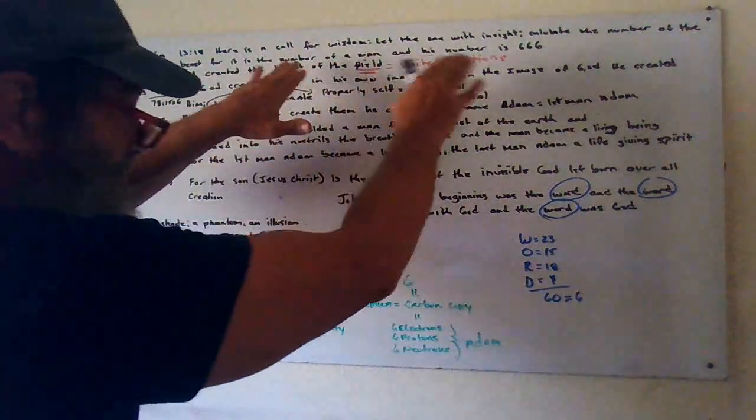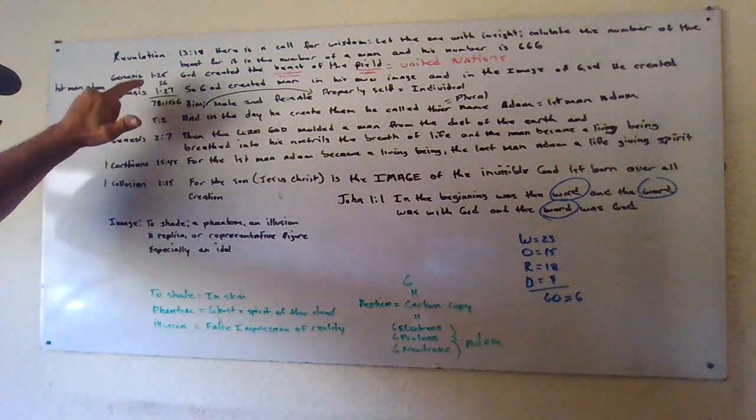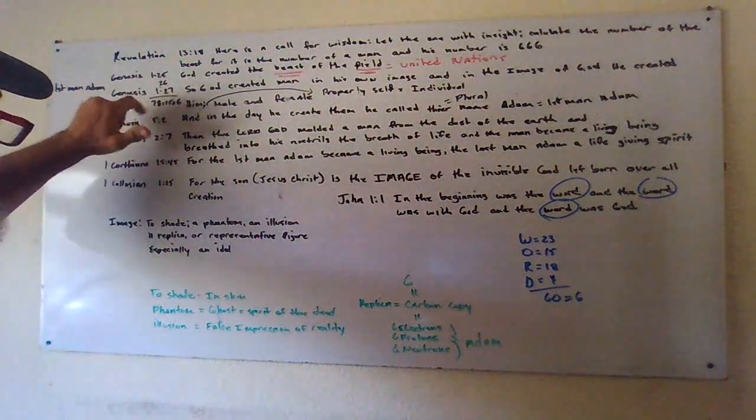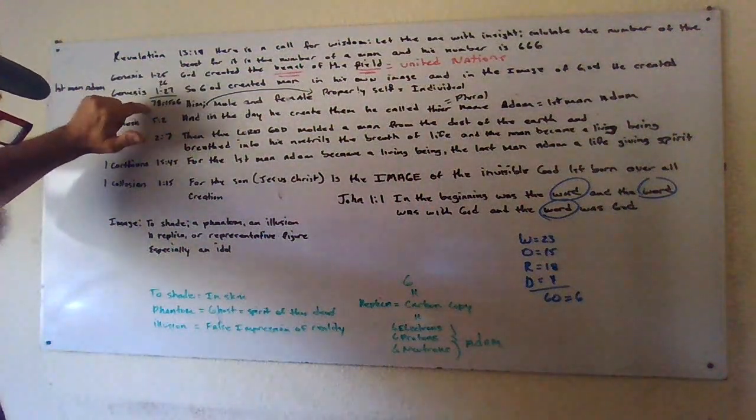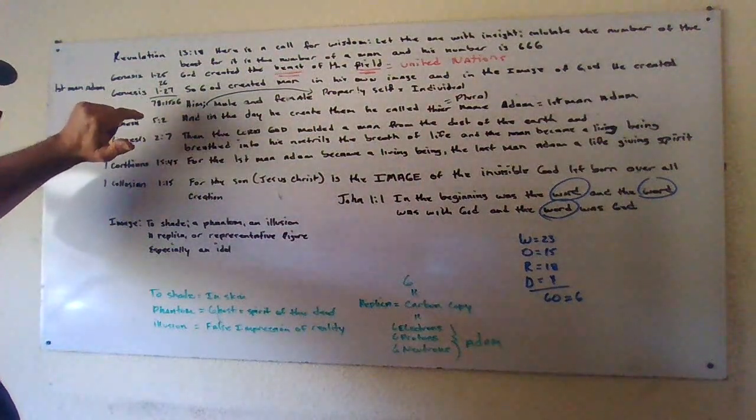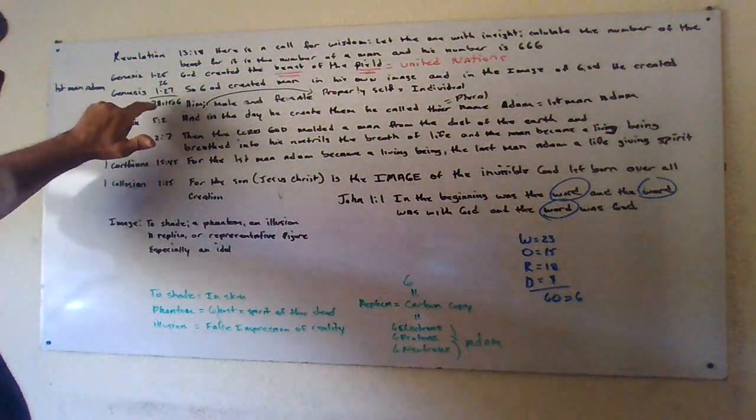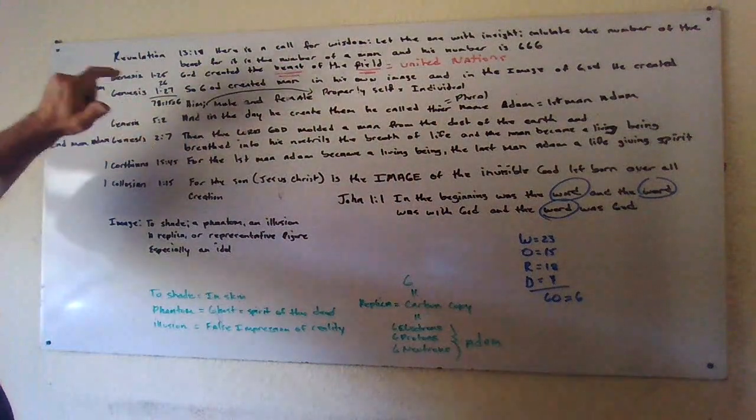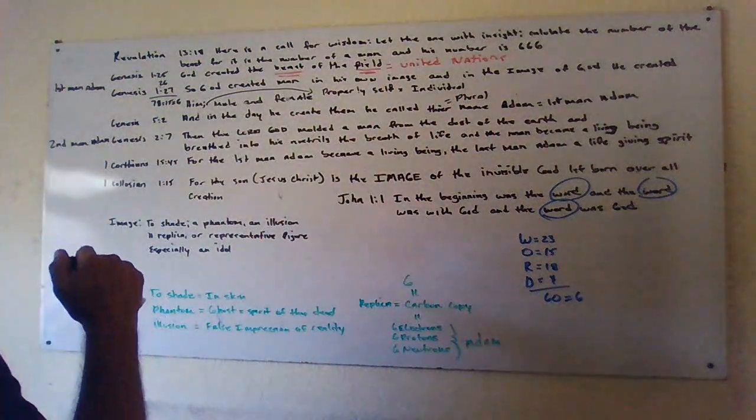This parable exactly is speaking about Genesis 1:25, 26, and 27. When you add the sum of these three parables, it comes to 78, and 7 plus 8 is 15, and 1 plus 5 is 6.